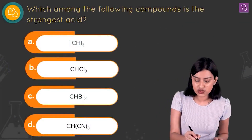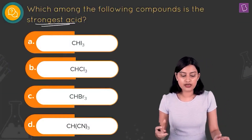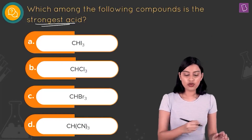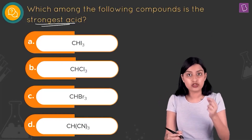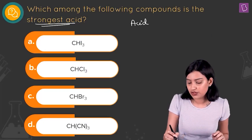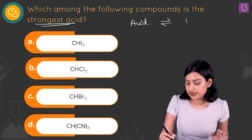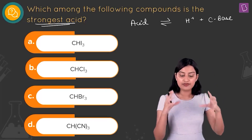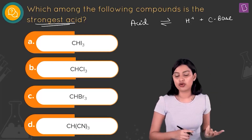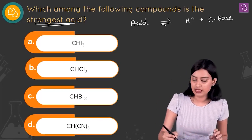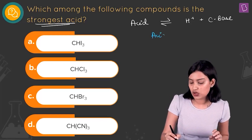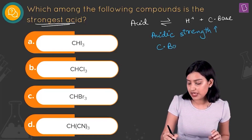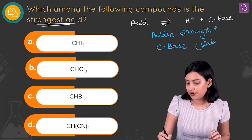Which among the following compounds is the strongest acid — CHI3, CHCl3, CHBr3, or CH(CN)3? For acid strength, we look at the equilibrium where an acid releases a proton plus its conjugate base. From each molecule we remove one hydrogen, and a stronger acid will have a more stable conjugate base.